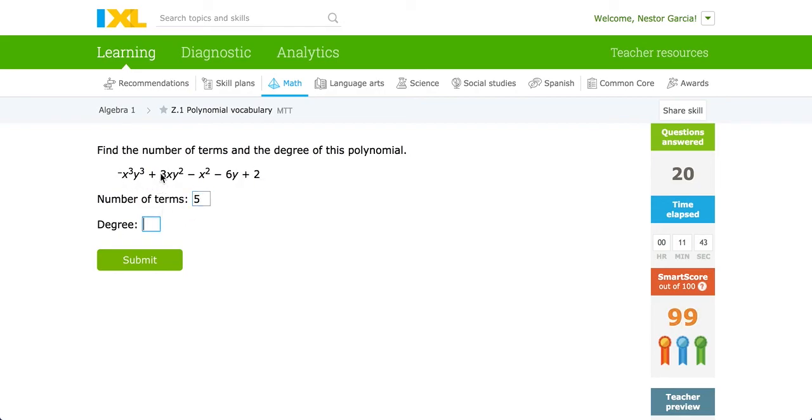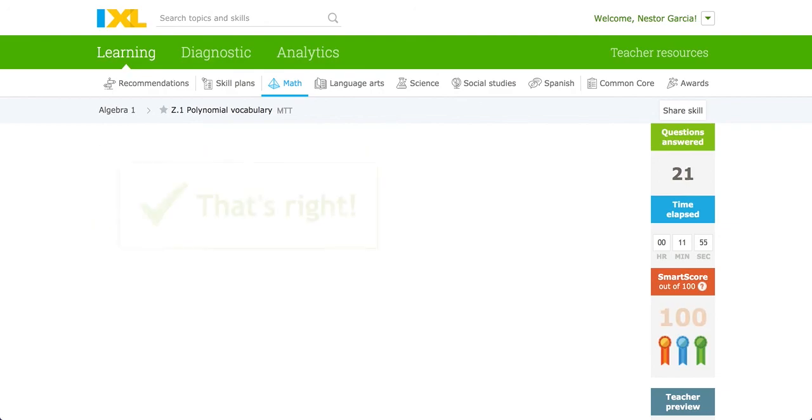The degree. Let's look here. Here we have the highest x exponent is three. The highest y exponent is three. Therefore when you add the two, that is a total of six. And we submit it as is.